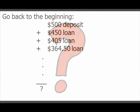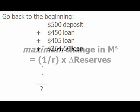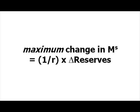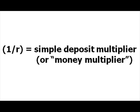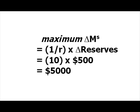How long will this process continue? In theory, it could go on indefinitely, although the loans would get pretty small after a while. How much of an effect is there on the money supply? If I go back to the beginning, there was my initial $500 deposit, then a new $450 checkable deposit, then another $405, then $364.50, and so on. The maximum change in checkable deposits, and therefore in the money supply, is 1 over R times the change in reserves. The ratio 1 over R is the simple deposit multiplier, or the money multiplier — in this case, 10. For this example, the maximum change is 10 times $500, or $5,000.